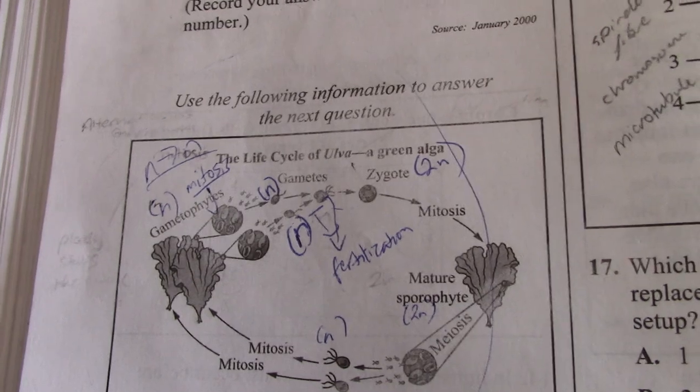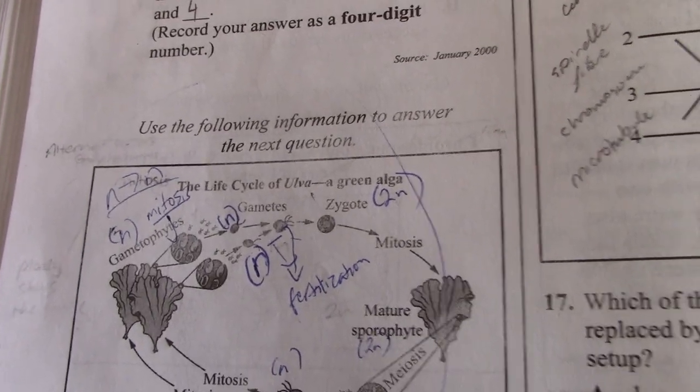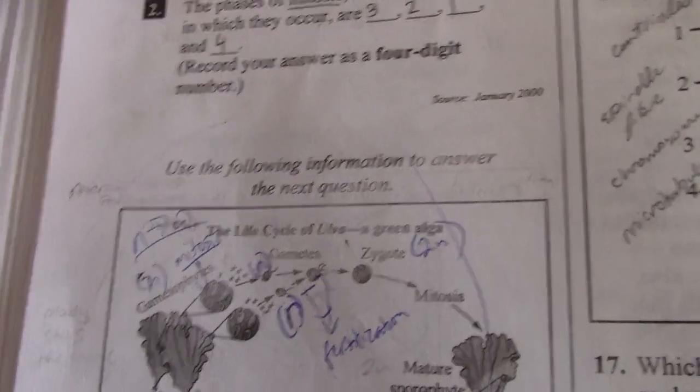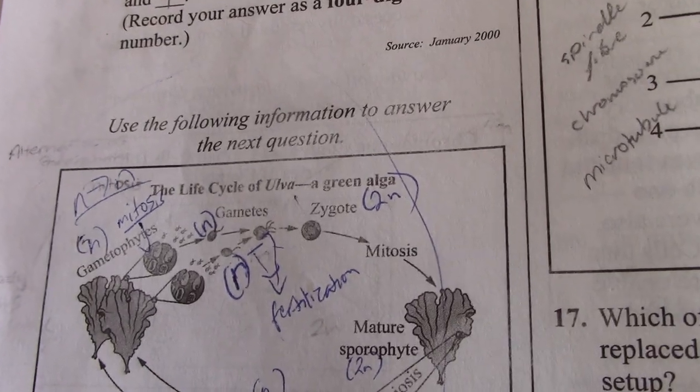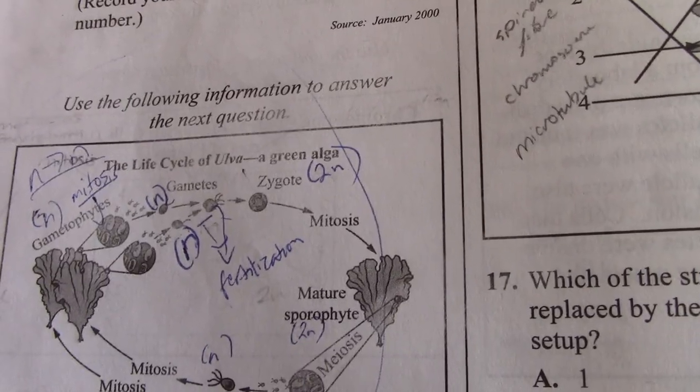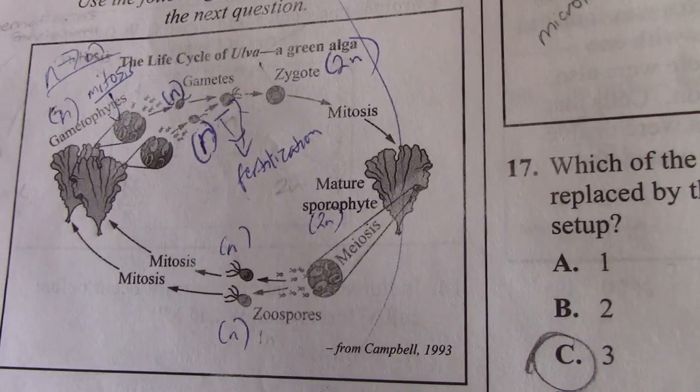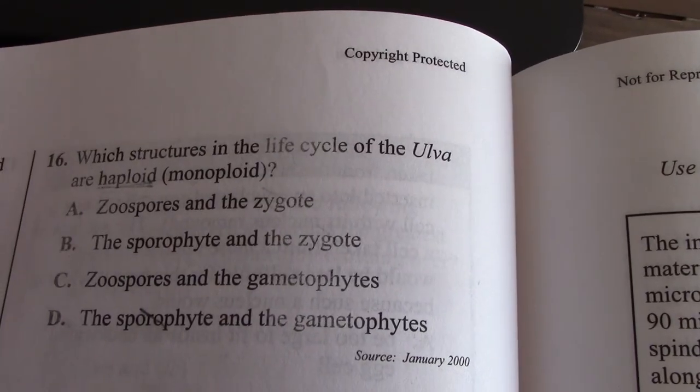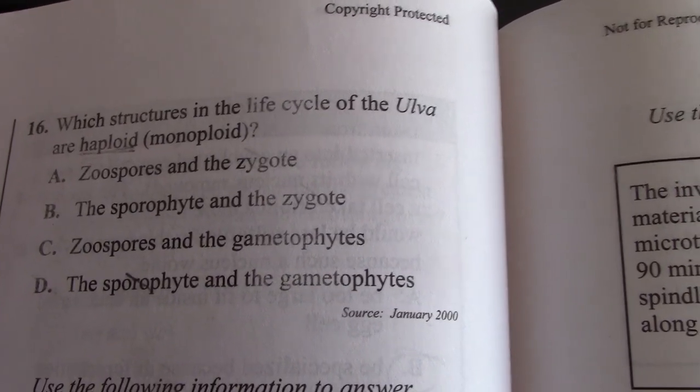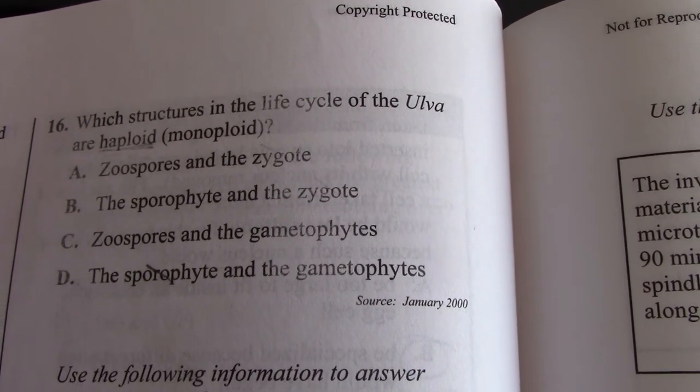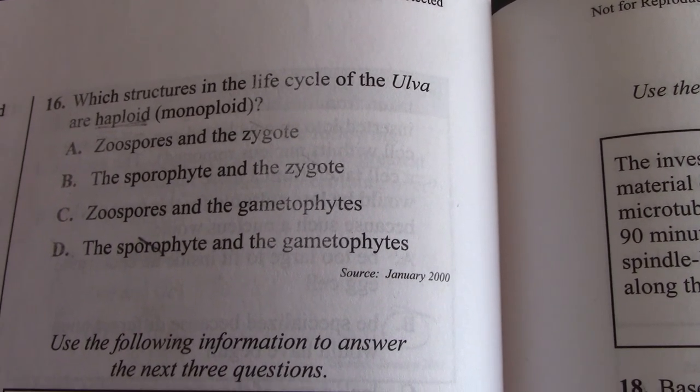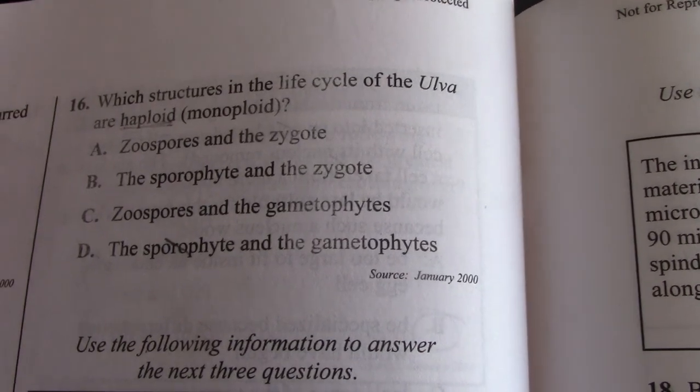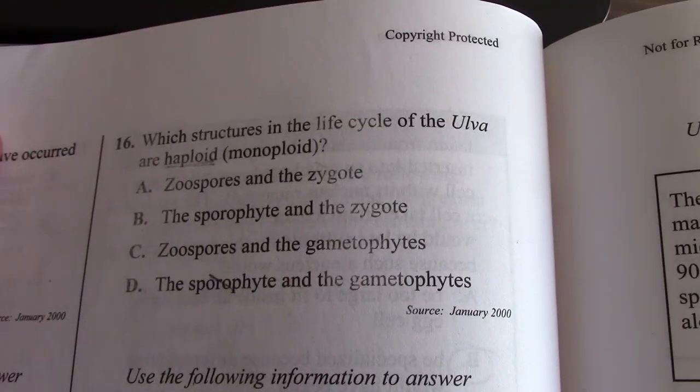And the gametes that come from the gametophytes are also haploid. So the process that makes the gametes in alternation of generations is actually mitosis because the ploidy doesn't change. So N plus N gametes comes together to make zygote. That's fertilization. Which structures in the life cycle of the ulva are haploid? The zygote is not haploid. The spores are. The sporophyte and the zygote are both diploid. So zoospores and gametophytes are both haploid. So C would be your answer.